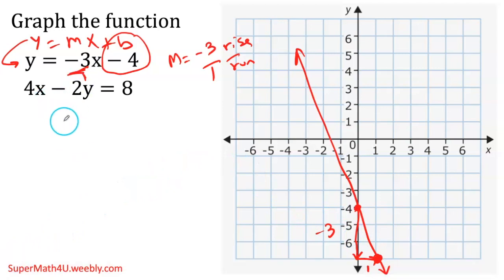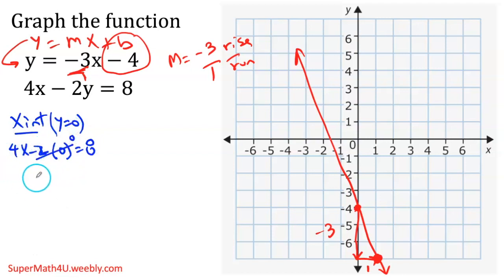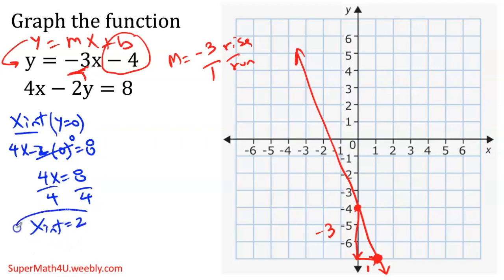Now let's graph the second equation, which is written in standard form — x and y on the same side. The easiest way to graph this is using the x- and y-intercepts. To find the x-intercept, I set y equal to zero: 4x minus 2 times 0 equals 8, so 4x equals 8, and dividing by 4, my x-intercept is 2.